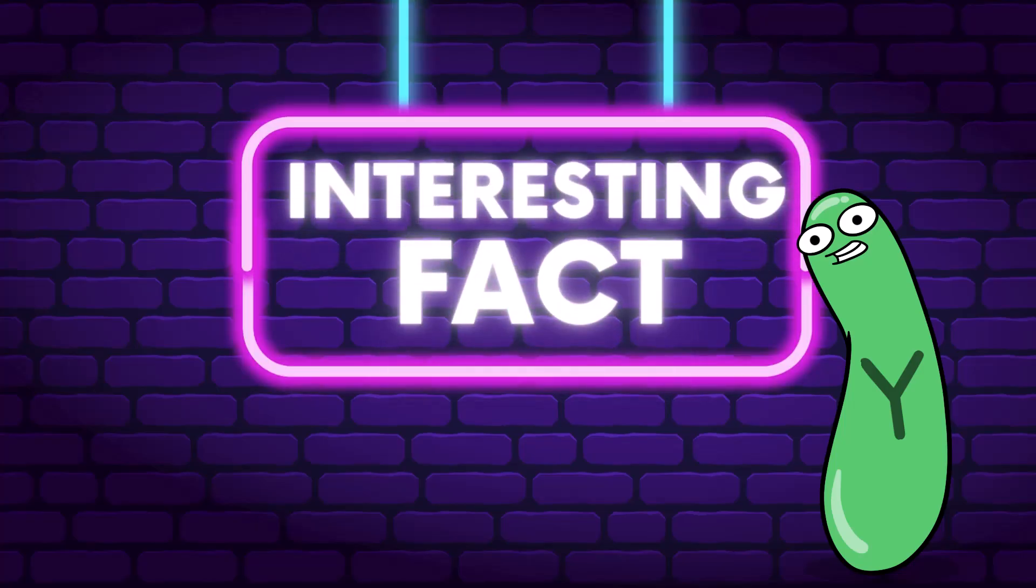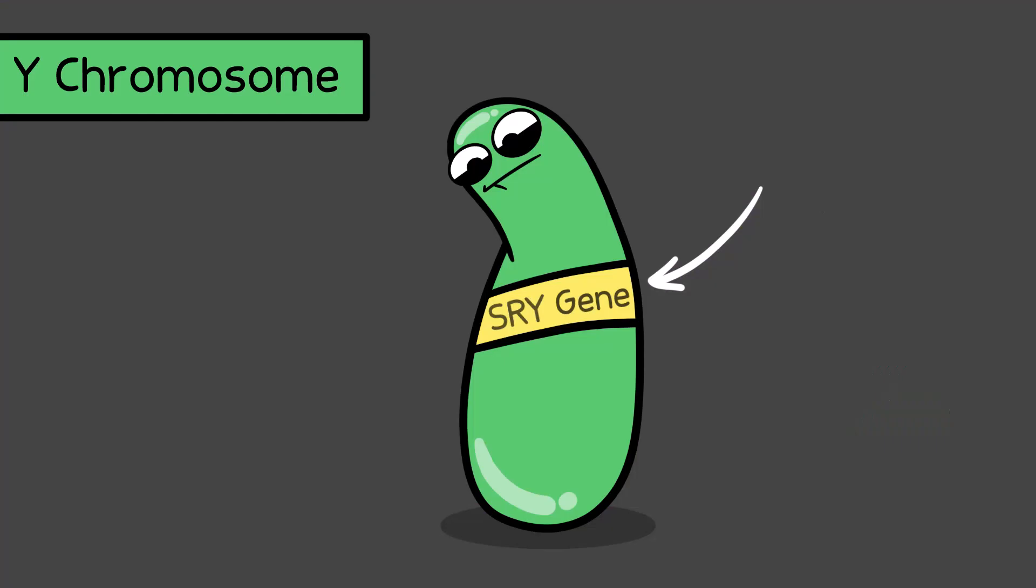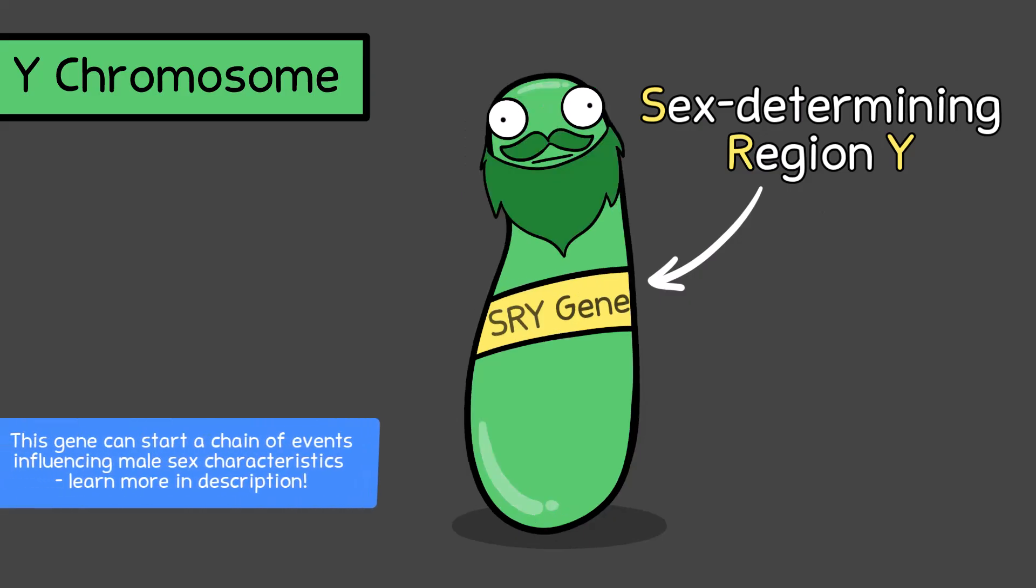Interesting fact to add about the Y chromosome: the Y chromosome has a gene on it called the SRY gene, which stands for Sex Determining Region Y. And it is a gene that, when expressed, triggers the development of male biological characteristics.